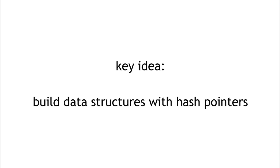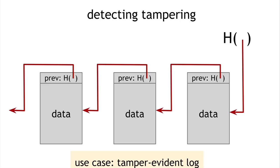We draw a hash pointer as 'h()' with an arrow pointing to something. We can use hash pointers to build all kinds of data structures — take any data structure like a linked list or binary search tree and implement it with hash pointers instead of regular pointers. For example, here's a linked list built with hash pointers, which we call a blockchain. Each block has data and a hash pointer to the previous block (where that block is and what its value was), and we remember the head of the list as a regular hash pointer.